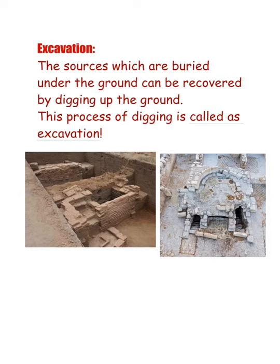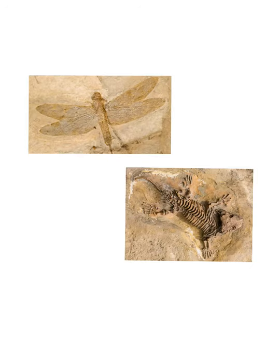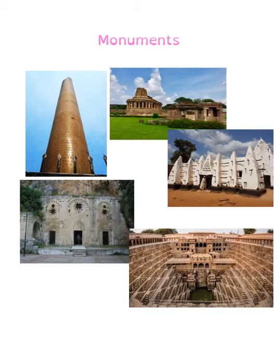Plant and animal remains indicate the climatic conditions and vegetation that existed at the time. The study of the bones of animals excavated helps historians to understand the pattern of animal domestication of a particular period.